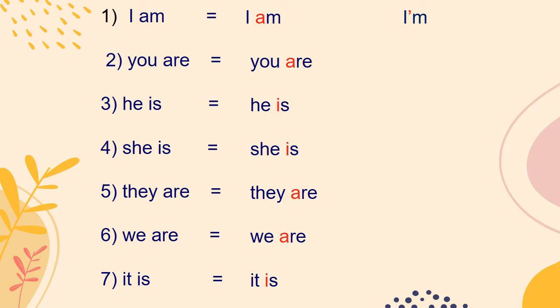Next: 'You are.' The first letter of the second word is removed. We use an apostrophe and write it as one word. Third: 'He is.' The letter 'i' of the second word is removed and an apostrophe is added. Then the two words are written as one word.